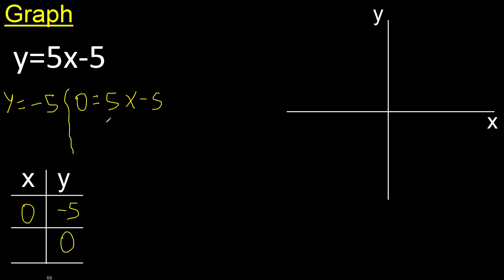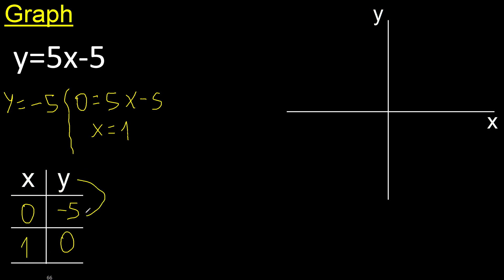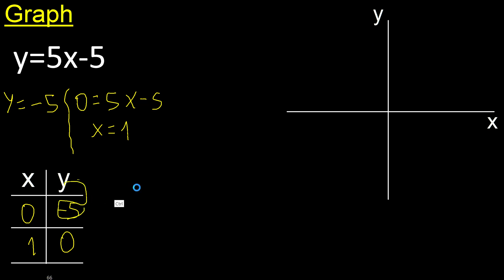Find x. x is 1, y is minus 5. Negative, negative, positive. y is minus 5, x is 0.